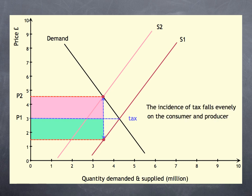We have a special word in economics to describe the situation. We talk about the incidence of tax. And in this example, the incidence falls evenly on consumers and producers.